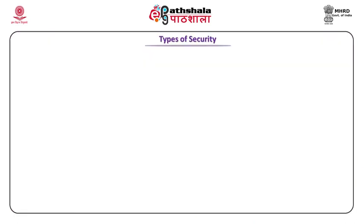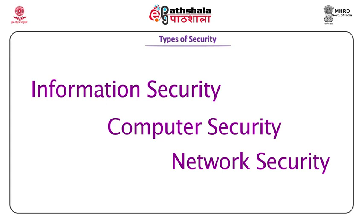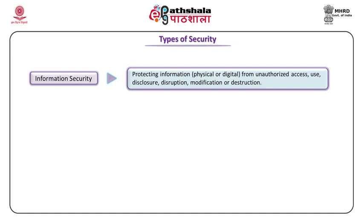We would be focusing on three types of security: information security, computer security, and network security. Information security includes that the information should be protected from unauthorized access. Unauthorized access means one who is not allowed to access the information is still accessing it. Other aspects include securing information from disruption — meaning the data has been disordered — destruction, meaning data has been destroyed, and modification, meaning the original data has been changed.